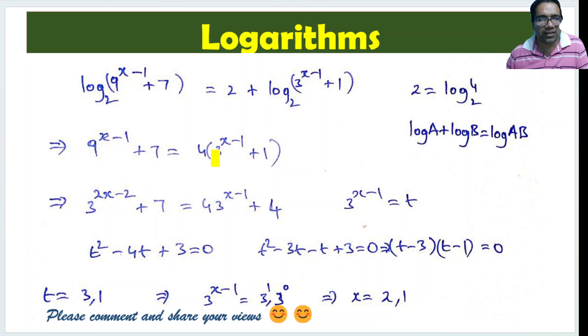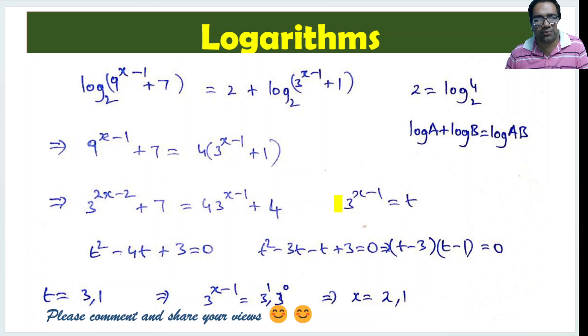There is also a 7 and another 3^(x-1) term. Let us substitute 3^(x-1) with t for simplification. Now this expression becomes t squared.